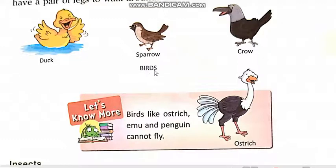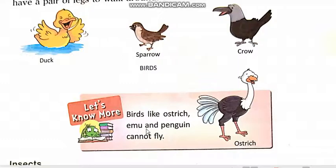Here are some birds: duck, sparrow, crow. Let's know more. Birds like ostrich, emu and penguin cannot fly. Birds jaysay ostrich, emu aur penguin hain, woh fly nahin kar sakte, uad nahin sakte.